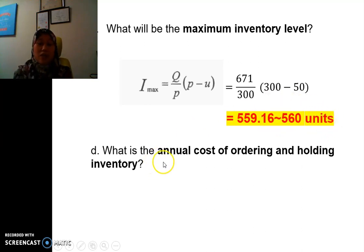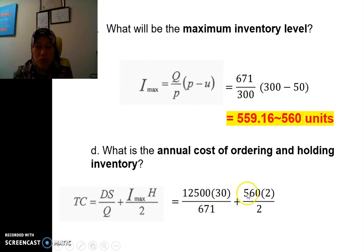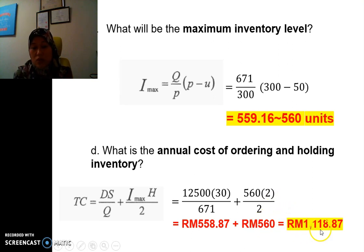And then for the annual cost of ordering and holding, the total cost is slightly different from the EOQ model, in which we need to consider the IMAX here. So we have calculated IMAX earlier, so the annual cost of ordering is 558.87, and then for the holding cost is 560, thus the total cost is 1118.87.